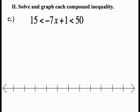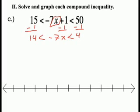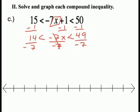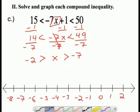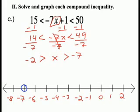15 < -7x + 1 < 50. Our variable is in the middle, so subtract 1 from all three sides: 14 < -7x < 49. Divide all three sides by negative 7 — remember, when dividing by a negative number, you must flip the inequalities. 14 ÷ (-7) = -2 and 49 ÷ (-7) = -7, giving -2 > x > -7. Number the number line to fit negative 2 and negative 7. Put open circles at both points, and since x is in the middle, shade in between.